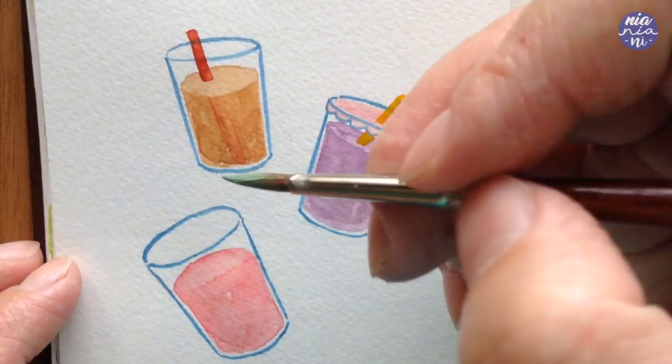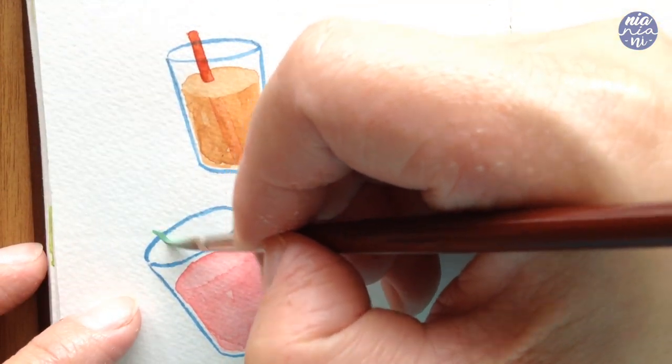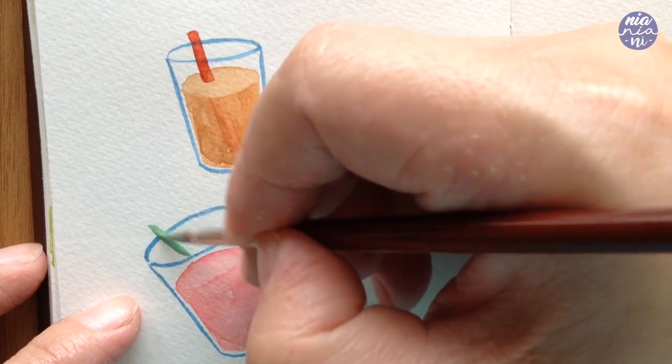However, if you want the drink to look completely opaque, don't worry about adding the straw at the bottom of the drink.